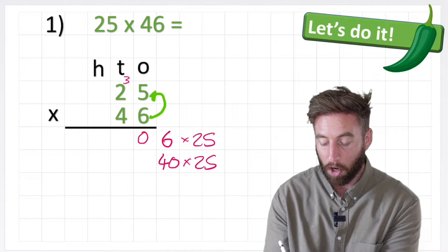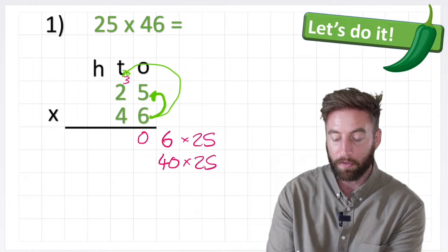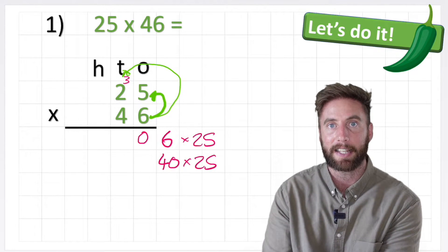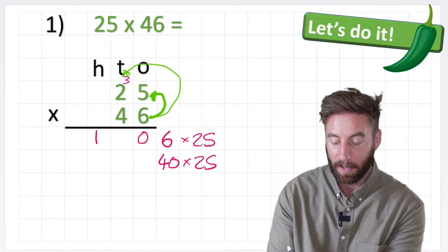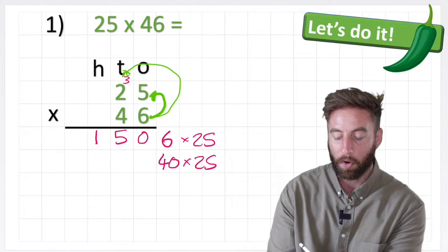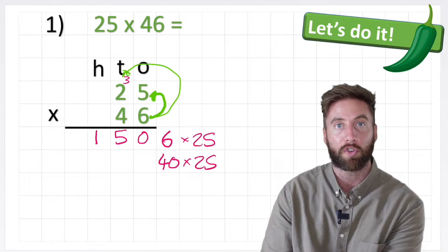Now I can do my tens column, 6 times my 2, and 6 times 2 is 12, but don't forget this 3 here, I've got 3 tens I need to add on. So I had 12, now I have 15. I have nowhere else to go so my whole 15 can go into my answer row. So the answer to 6 times 25 is 150.